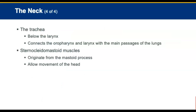The trachea is below the larynx and connects the oropharynx and the larynx with the main passages to the lungs. On either side of the lower larynx and the upper trachea lies the thyroid gland. Sternomastoid muscles originate from the mastoid process of the cranium and insert into the medial border of each collarbone and the sternum at the base of the neck, allowing for movement of the head.